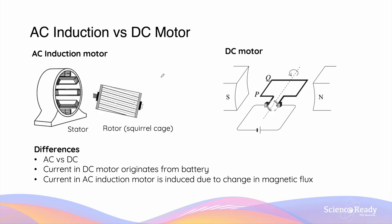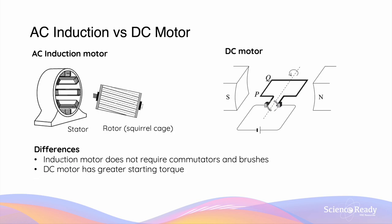An obvious difference between the two motors is that they have different power sources. An AC induction motor utilises alternating current, whereas a DC motor uses direct current. The current in a DC motor originates from a battery, while the current in the AC induction motor is induced due to EMF caused by a change in magnetic flux according to Faraday's law. Structurally, an AC induction motor does not require commutators and brushes, whereas a DC motor has a pair of brushes and split-ring commutators. A DC motor also has a greater starting torque, as the current through the coil is already at its maximum value as supplied by the battery, whereas the AC induction motor has a low starting torque because torque depends on the rate of flux change, which is lowest during the startup phase.